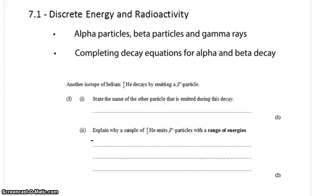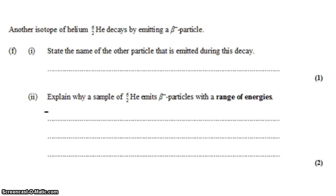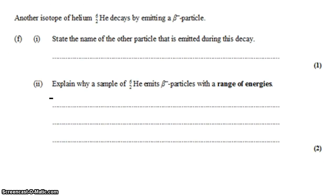David Kahn here, another IB question in topic 7.1. We're looking at properties of decay. We have an isotope of helium called helium-6, and it decays by emitting a beta minus particle. We want to state the name of the other particle that's emitted during this decay.